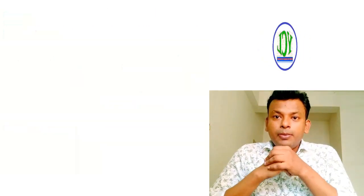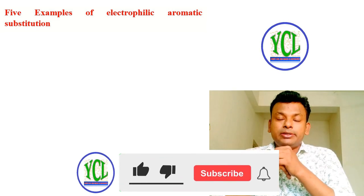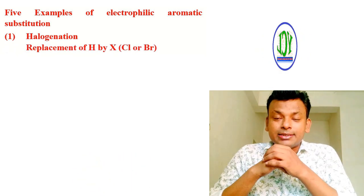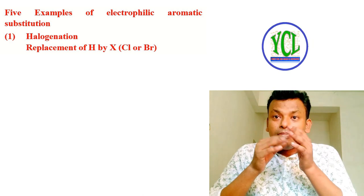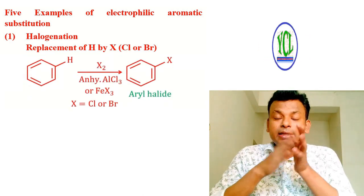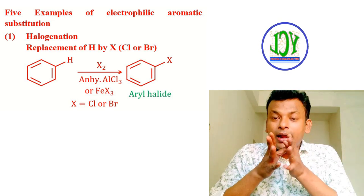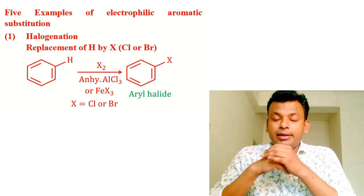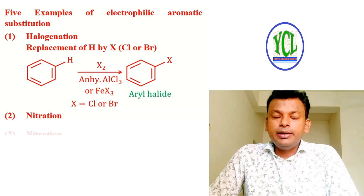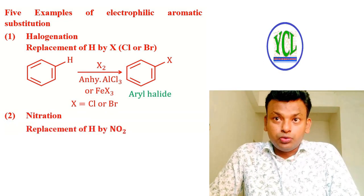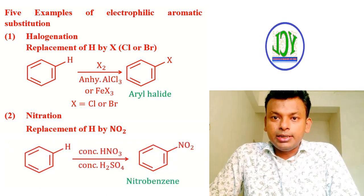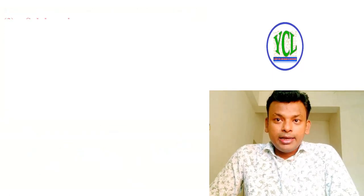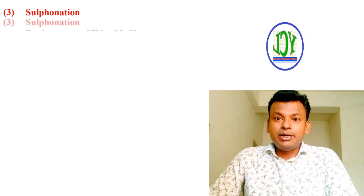There are five examples of electrophilic aromatic substitution. First, halogenation: replacement of hydrogen by X (X = Cl or Br). The reaction uses X₂ (Cl₂ or Br₂) with anhydrous AlCl₃ or FeX₃ as catalyst, forming aryl halide. Second, nitration: replacement of hydrogen by NO₂, using mixed acid — concentrated HNO₃ and concentrated H₂SO₄ — forming nitrobenzene.